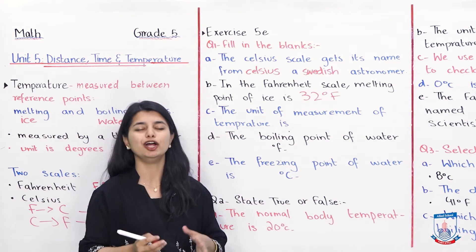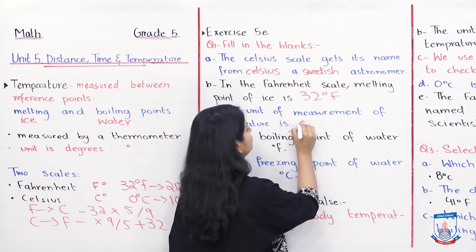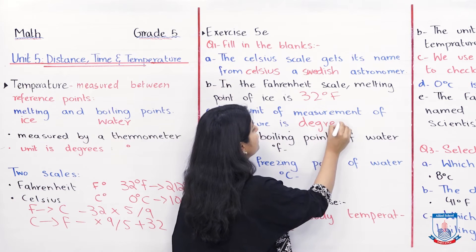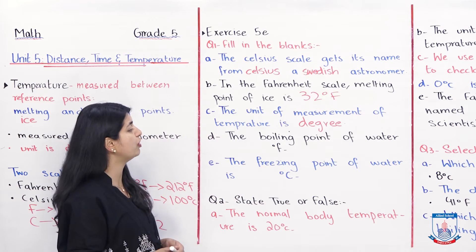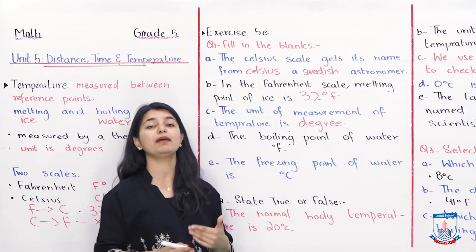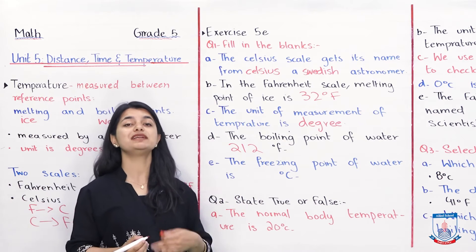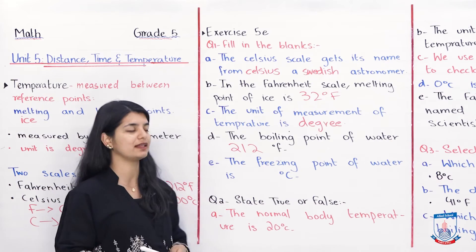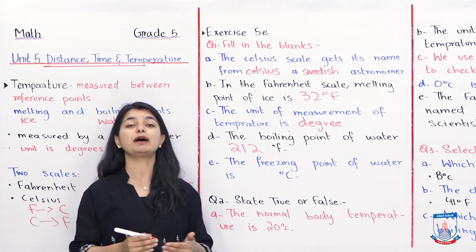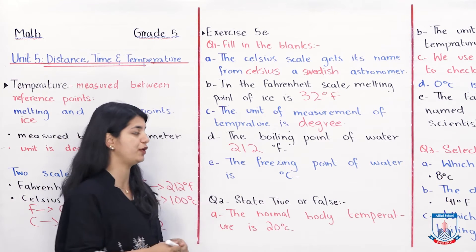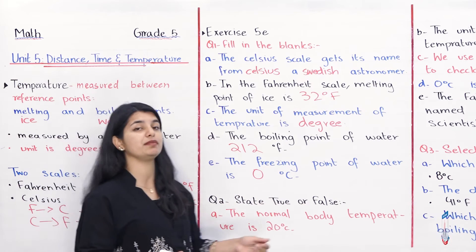We have discussed that already, so write 32 degrees Fahrenheit. Part C: the unit of measurement of temperature is obviously degrees — the scale is Celsius or Fahrenheit, but the unit is degree. Part D: the boiling point of water in Fahrenheit is 212 degrees Fahrenheit; in Celsius it is 100 degrees centigrade. Part E: the freezing point of water is 0 degrees centigrade.